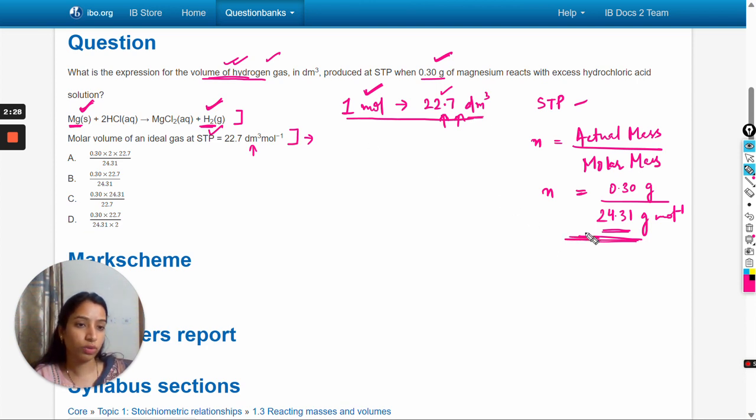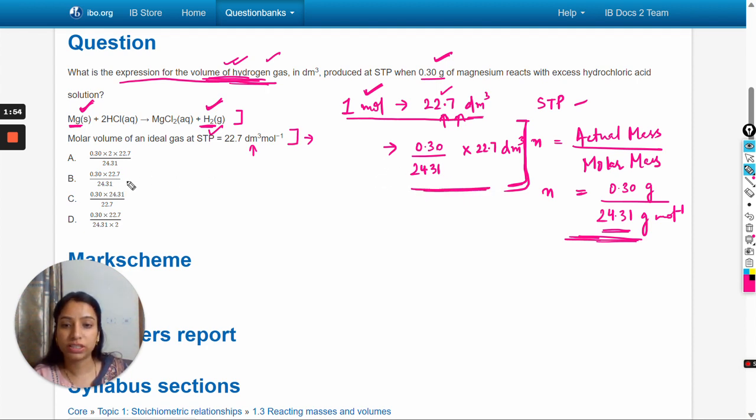In this question we have to calculate the volume of the hydrogen gas, and that's why we don't need to calculate the exact value - because an expression is asked here. So we can check which option is right: 0.30 multiplied by 22.7 divided by 24.31. The answer should be option B. Let's check the mark scheme.